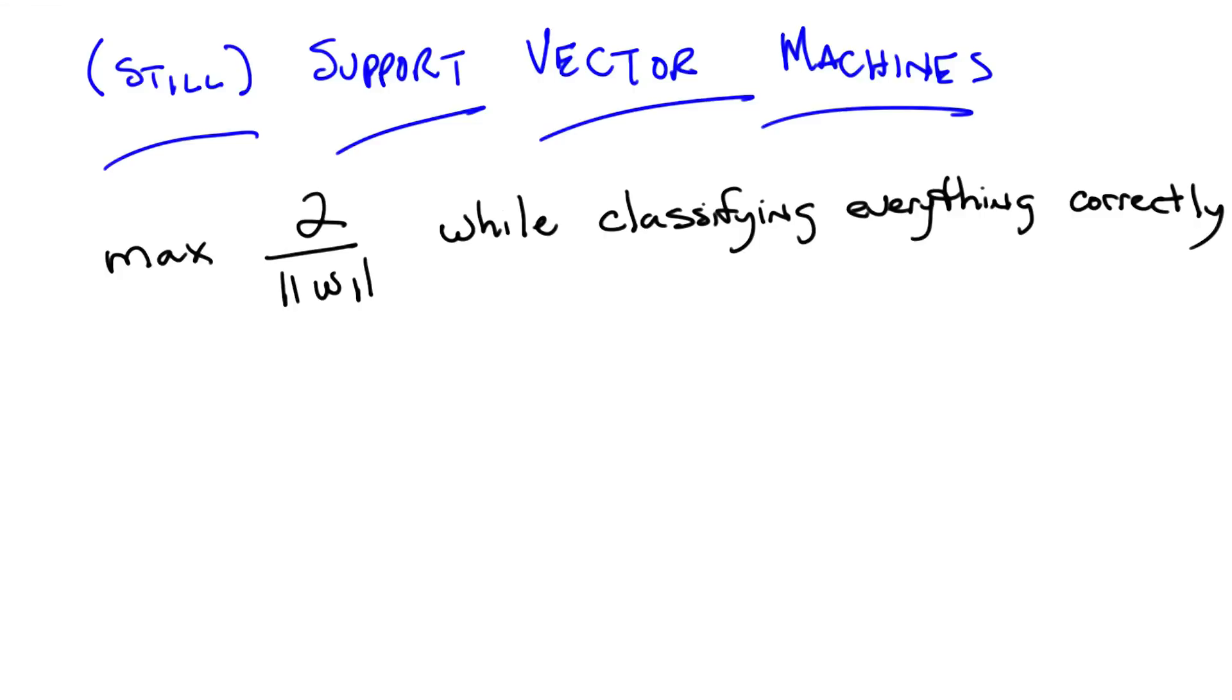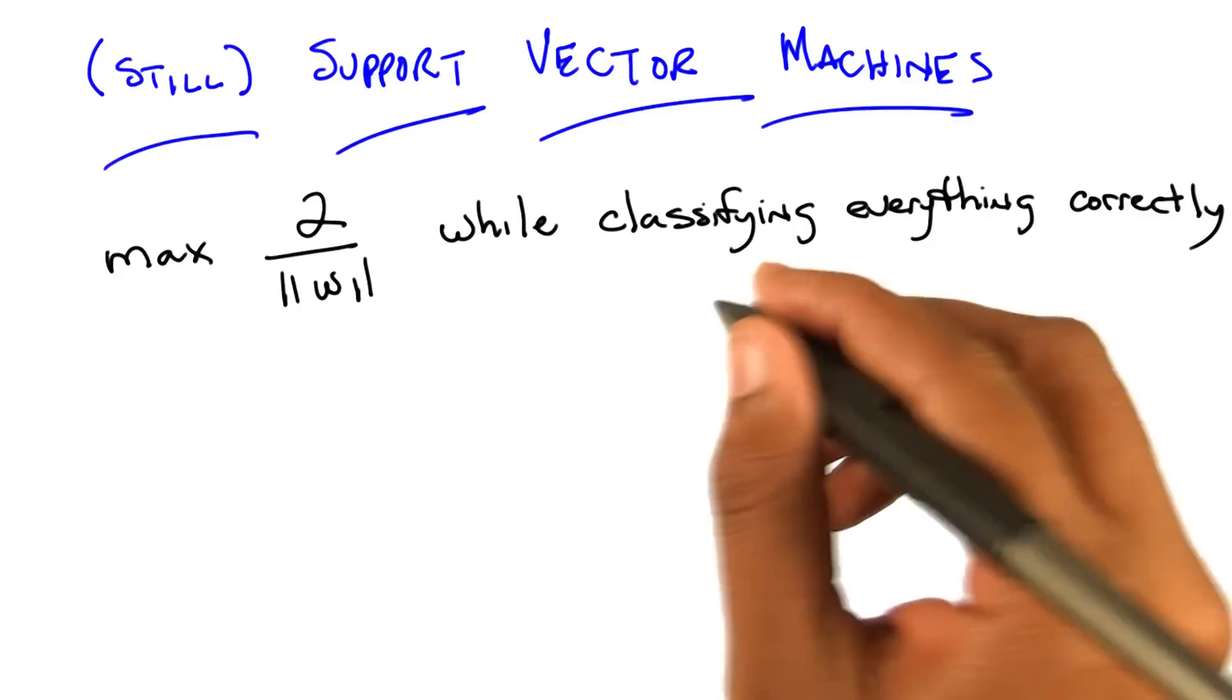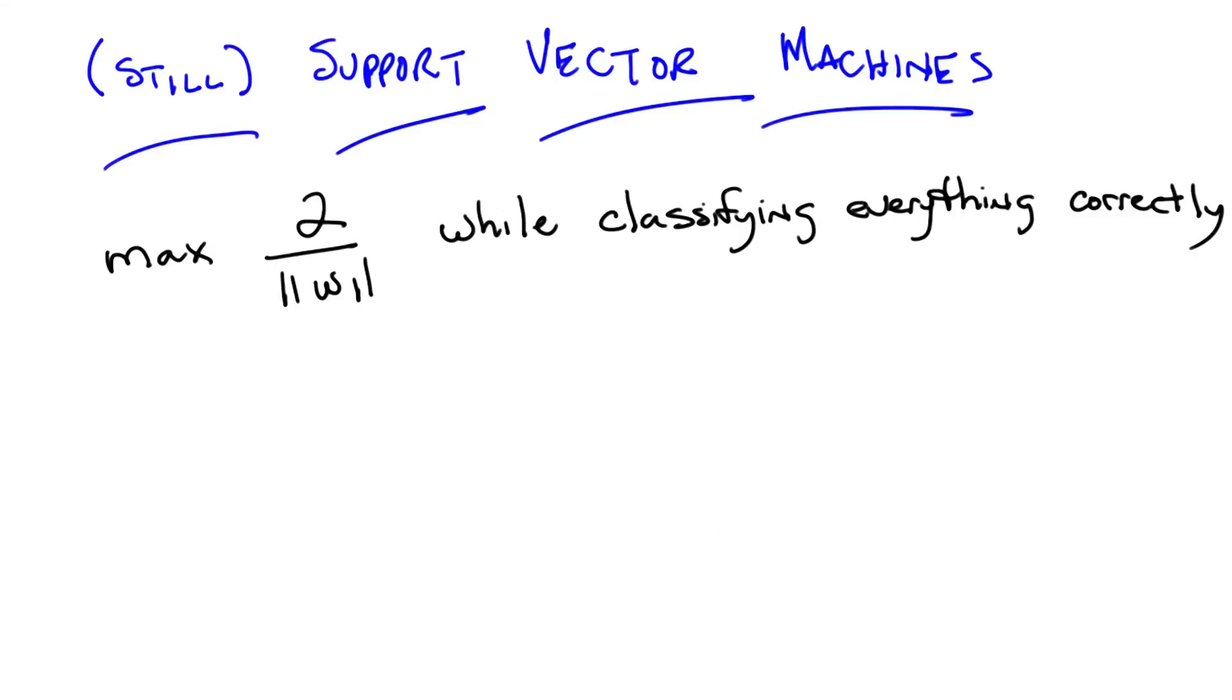But while classifying everything correctly is not a very mathematically satisfying expression. But it turns out we can turn that into a mathematically satisfying expression. And let me show you how to do that. So here's a simple equation. While classifying everything correctly, it turns out to be the same as, and I'm just going to write it out for you, Michael, and see if you can guess why this works.